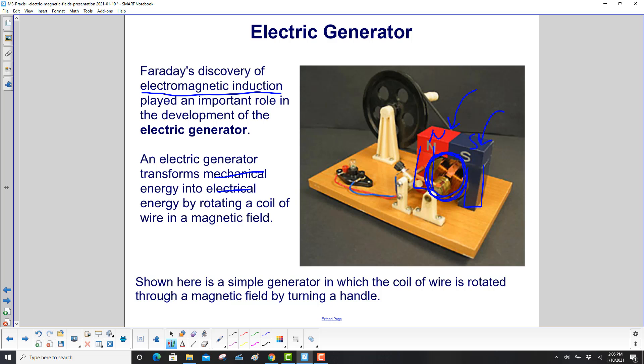The coil of wire is rotated through the magnetic field by turning the handle over here. You've got this little pulley arrangement with a rubber band moving it around. So this coil turns and that generates electricity which will light this light bulb.